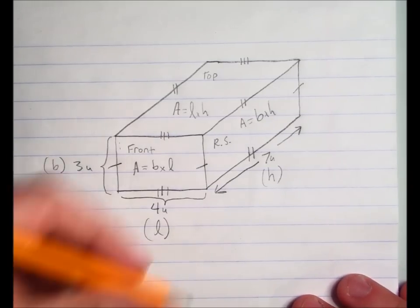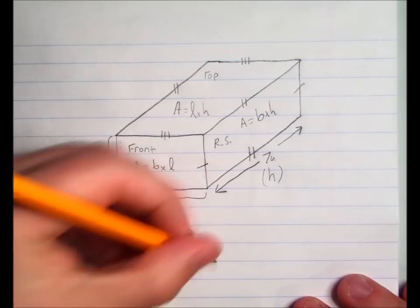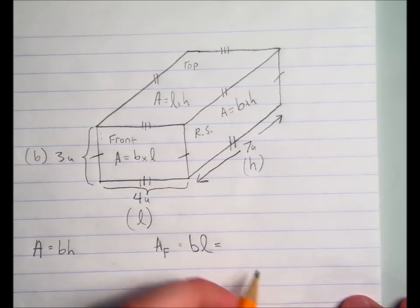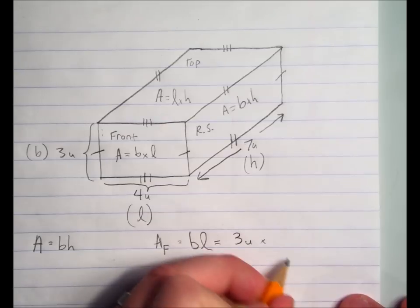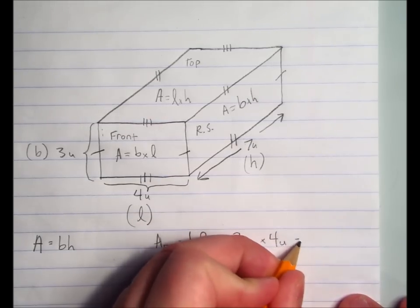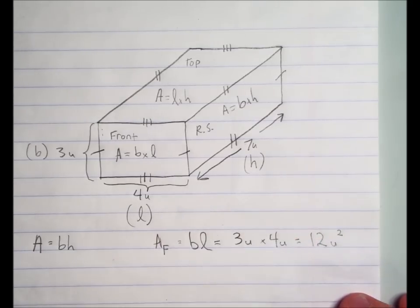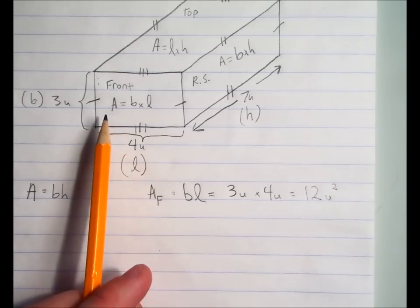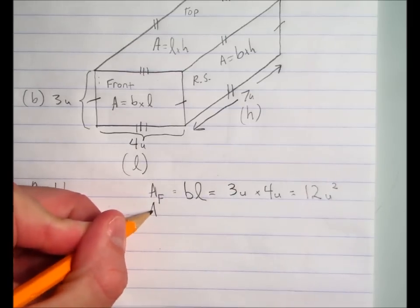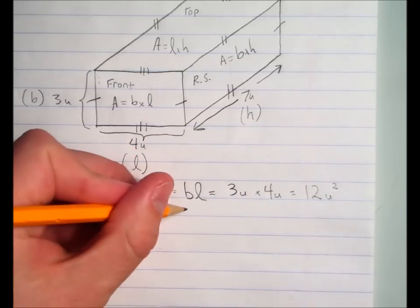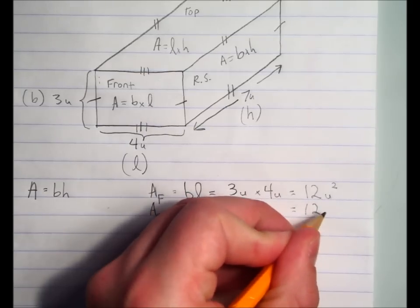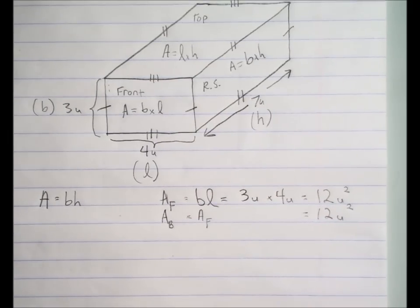The area of the front equals base times length, which is three units times four units, giving us twelve units squared. We can save some work here because the back is congruent with the front, so the area of the back equals the area of the front — also twelve units squared.